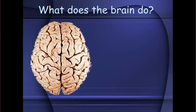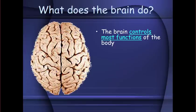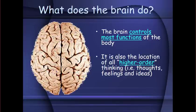What exactly does the brain do? The brain controls most functions of your body. It is also the location of all higher-order thinking — your thoughts, feelings, ideas, and all the abstract information that you process through your mind.